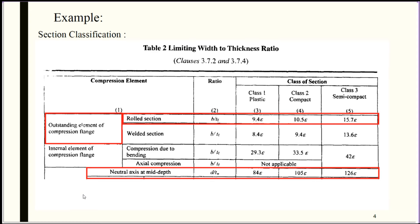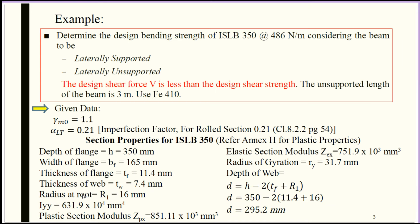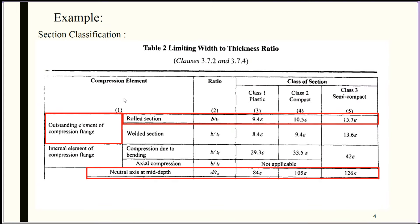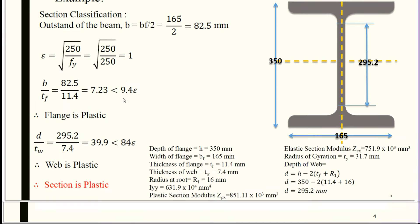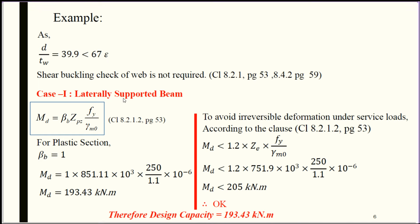Therefore, for the given section ISLB 350, when the length of beam is 3 meters, its maximum capacity to take loading is 193 kilonewton meter. That is the design bending capacity.